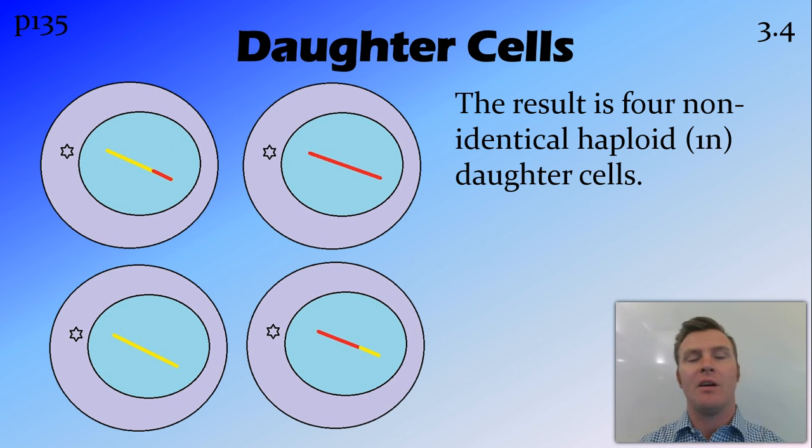Now, this is a very simplified version. Chromosomes contain thousands of genes, and this crossing over occurs at multiple locations. So all I'm trying to demonstrate here is that these daughter cells are non-identical.